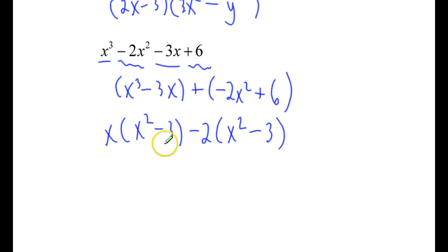And you want to see if those parentheses match. They do, so you are ready to take out the GCF one more time. This GCF is x squared minus 3 times, let's see what's left over, x and negative 2, so x minus 2. And we have factored that, and that's how you do factoring by grouping.